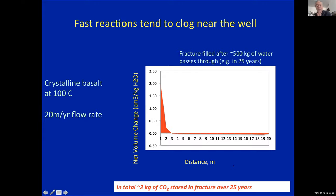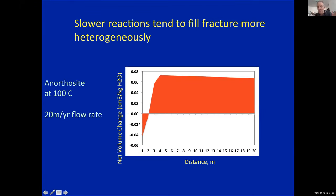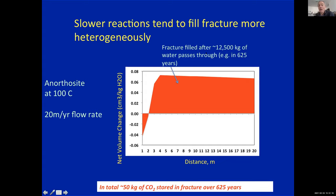However, if one goes to a slower reacting rock, like an anorthosite at 100 degrees, the distribution of secondary phases is much more spread out — a fair bit of clay and a bit of calcite. Because the reaction is spread out, the volume change is more distributed, and I calculate that the fracture will fill only after 12,500 kilograms of water have passed through, storing as much as 50 kilograms of CO2 in the single fracture over the course of 600 years.